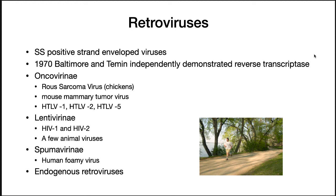Our final topic in module 12 is retroviruses. Retroviruses are single-stranded positive strand envelope viruses. They were discovered in the 1960s and 70s, and Baltimore and Temin independently demonstrated reverse transcriptase. Howard Temin was a professor at this university, and he and Baltimore won the Nobel Prize for this discovery. I was lucky enough to actually be a TA of his.